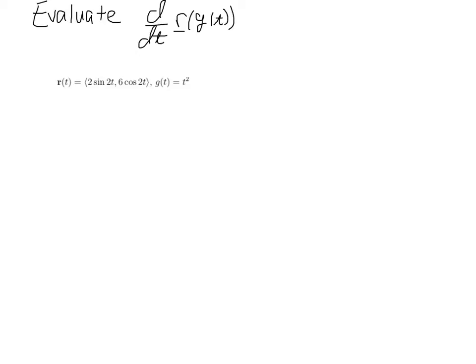Hello calculus students. In this problem we're going to evaluate the derivative of this path here, but we're going to use the chain rule because we have a composition of functions. We have the vector-valued function evaluated at g of t, where here's our vector-valued function and here is our scalar function.